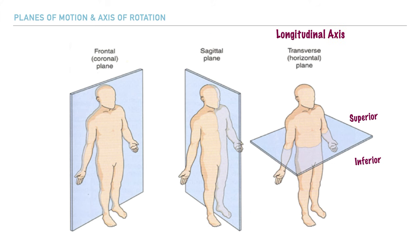Last but certainly not least, we have the transverse plane, which divides the body into superior and inferior portions. All of the osteokinematic movements within this plane are possible because of some type of rotation around this plane's axis. This axis runs perpendicular to the plane itself, and for the transverse plane we have what's called the longitudinal axis, which runs down the length of the body.